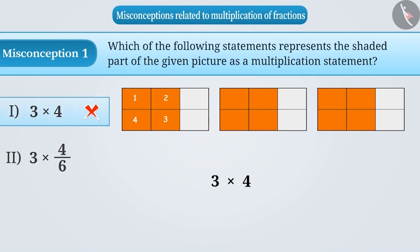However, this is wrong. The correct understanding is that 4 sixth part is repeated three times. Therefore, while multiplying, we will write 3 into 4 by 6.